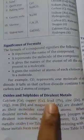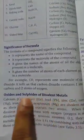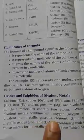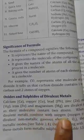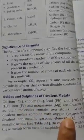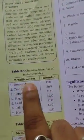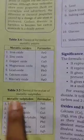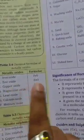Oxides and sulfides of divalent metals: the following are the divalent metals — calcium, copper, lead. When these divalent metals react with oxygen, they form metallic oxides; examples are iron oxide and zinc oxide. When they react with sulfur, they form metallic sulfides; examples are iron sulfide and zinc sulfide.